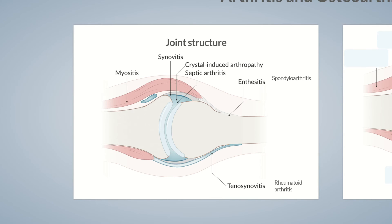Another condition is myositis, which is characterized by muscle inflammation. Myositis can be caused by autoimmune diseases or drugs such as statins. Inflammation of the bursa is termed bursitis, which is usually caused by repetitive strain placed on the bursa.